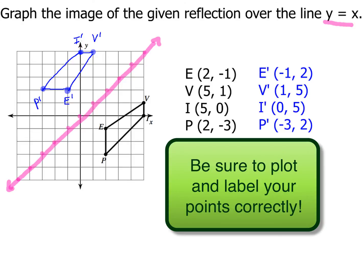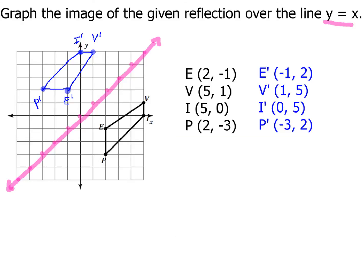So that's all there is to graphing the image of a given reflection over the line y equals x. But make sure that you just take a look at what the coordinates are, and then you'll know all you need to do is switch them around. Once you've got them switched, then go back and plot the picture.